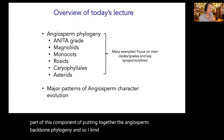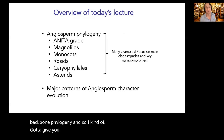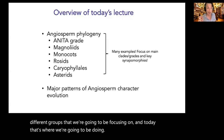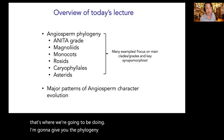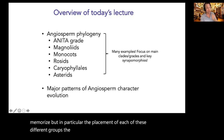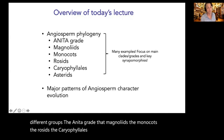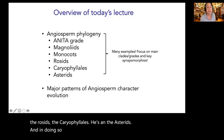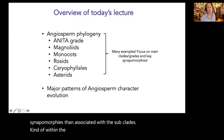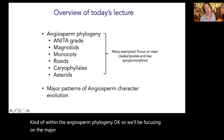I'll give you the phylogeny I'd like you to memorize — in particular the placement of each of these groups: the ANITA grade, the magnoliids, the monocots, the rosids, the caryophyllales, and the asterids. I'll also focus on key synapomorphies associated with these subclades within the angiosperm phylogeny.